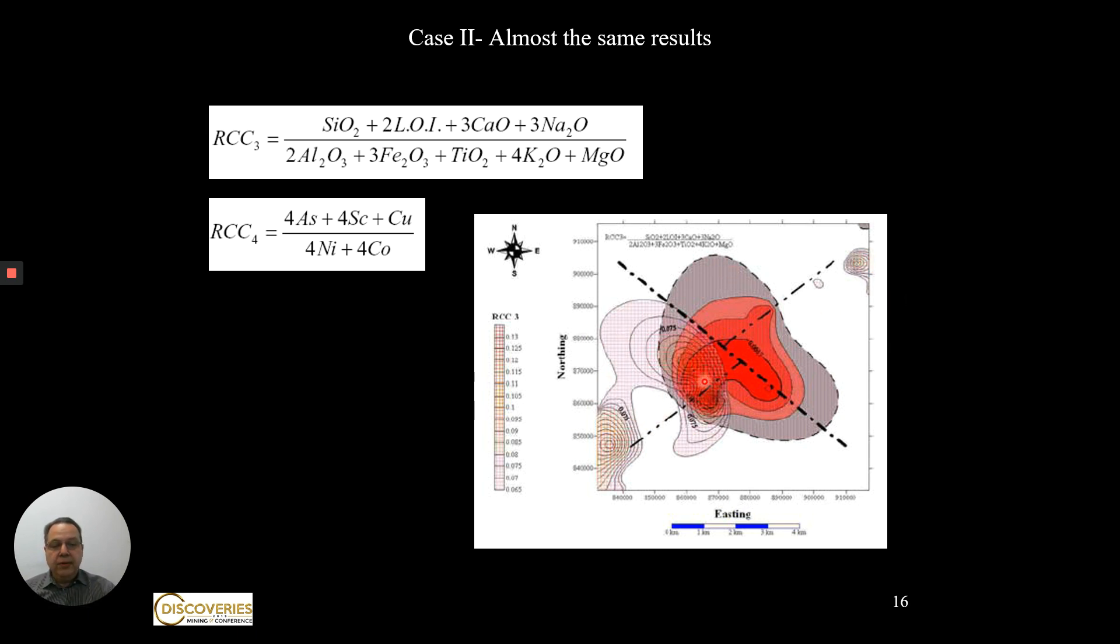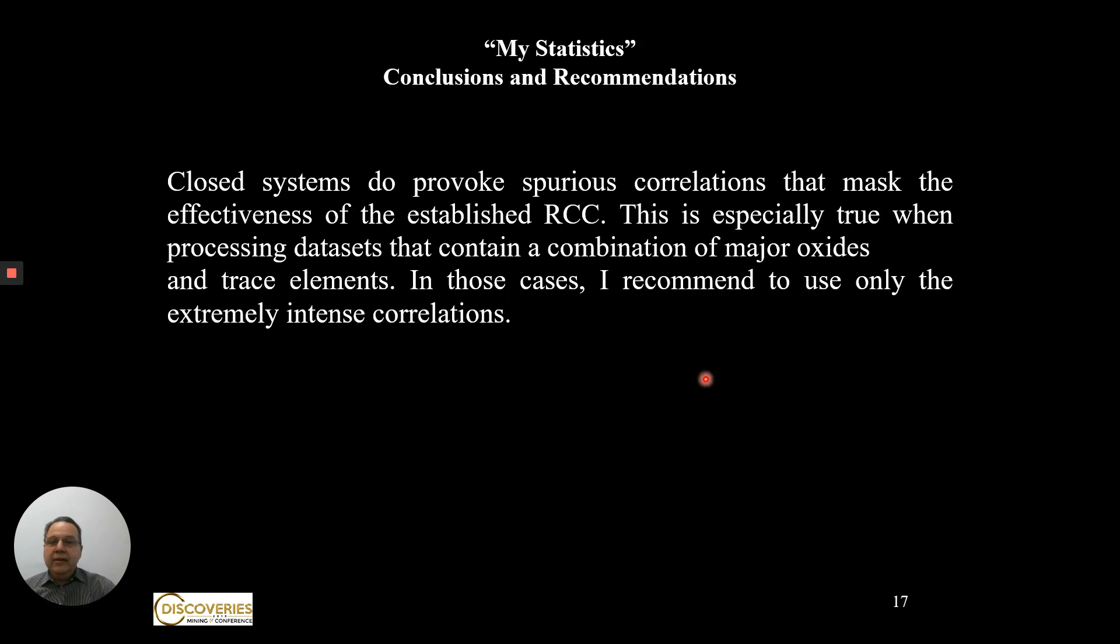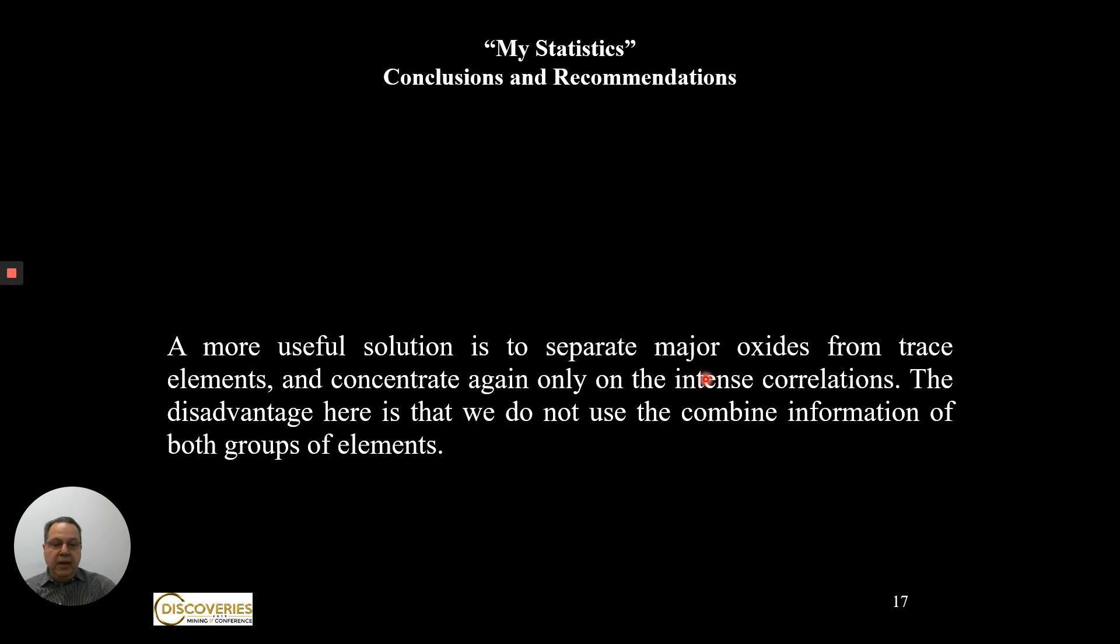Regrettably, it is clear that closed systems provoke spurious correlations, and it's especially true when you're trying to combine major oxides with trace elements. A better solution would be to separate those groups, majors from oxides, but there are clear disadvantages of doing that.